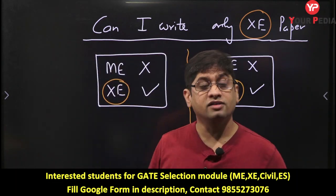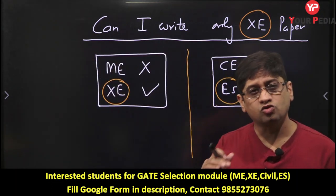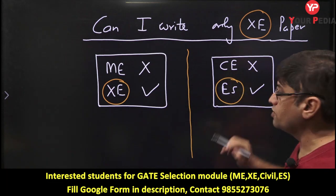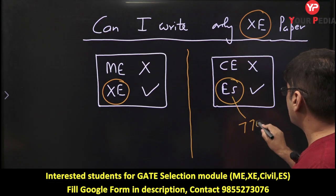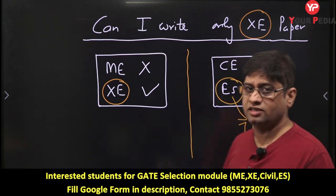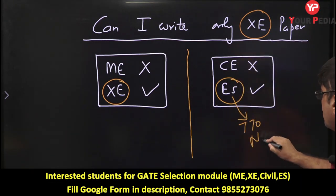There are so many students who wrote last year only with Environmental Science, got really good scores - let's say 770 GATE score with Environmental Science - and got into